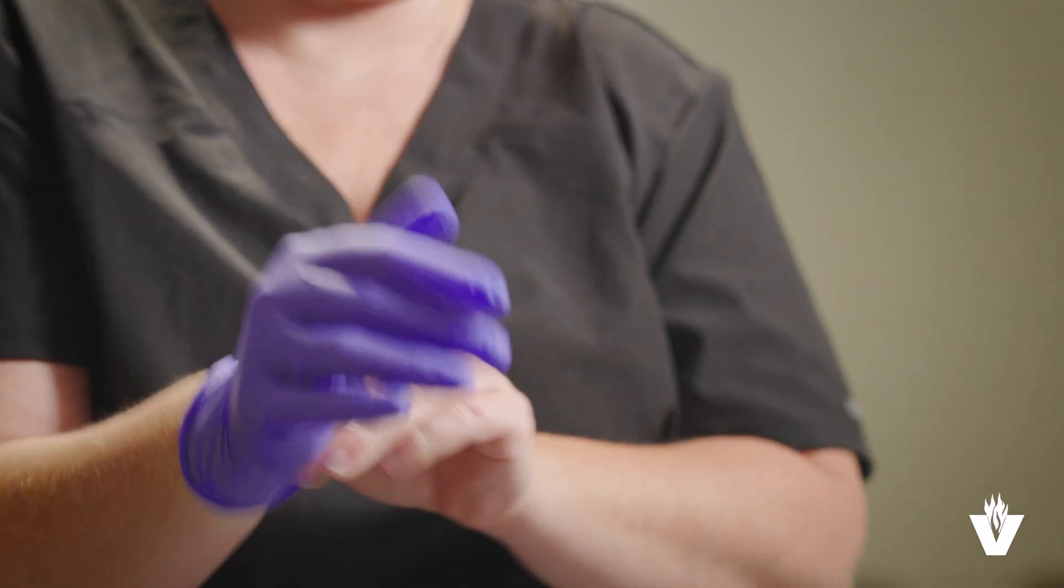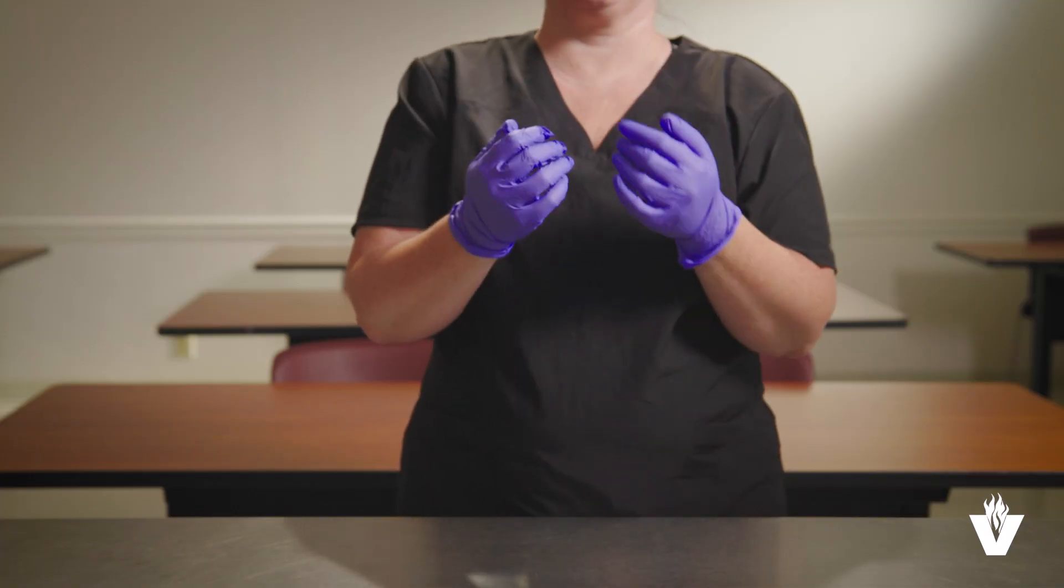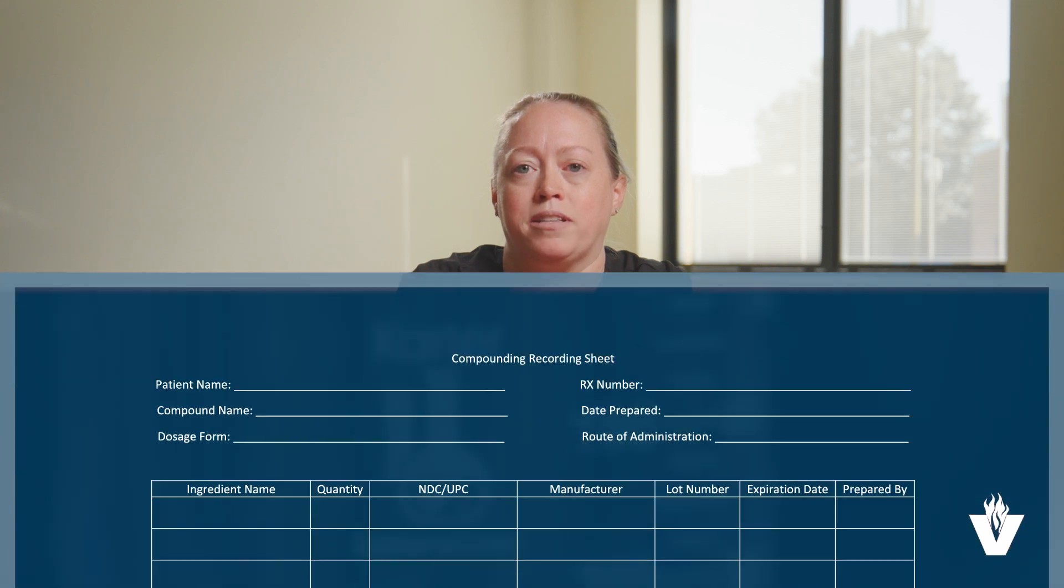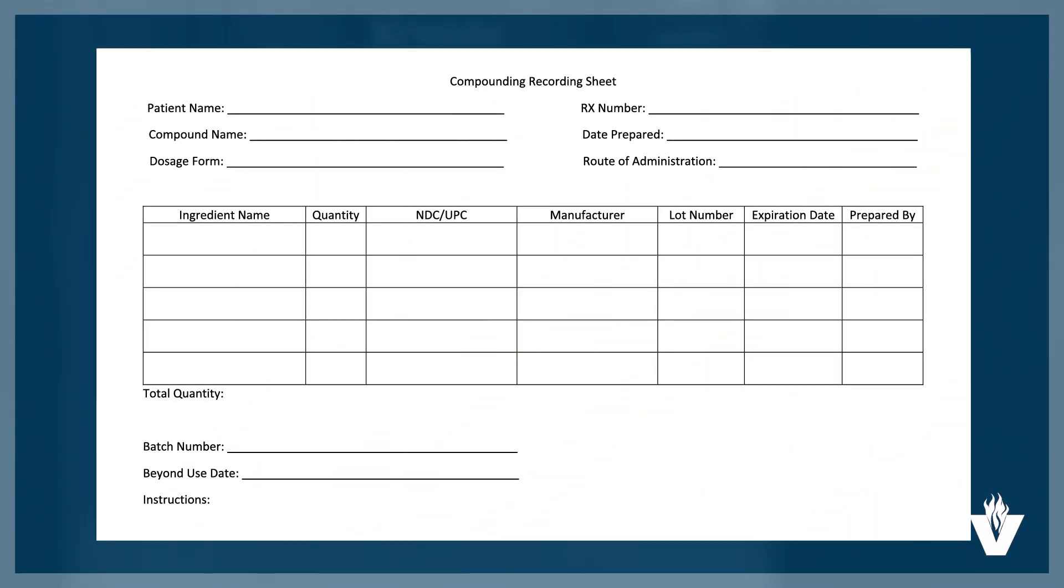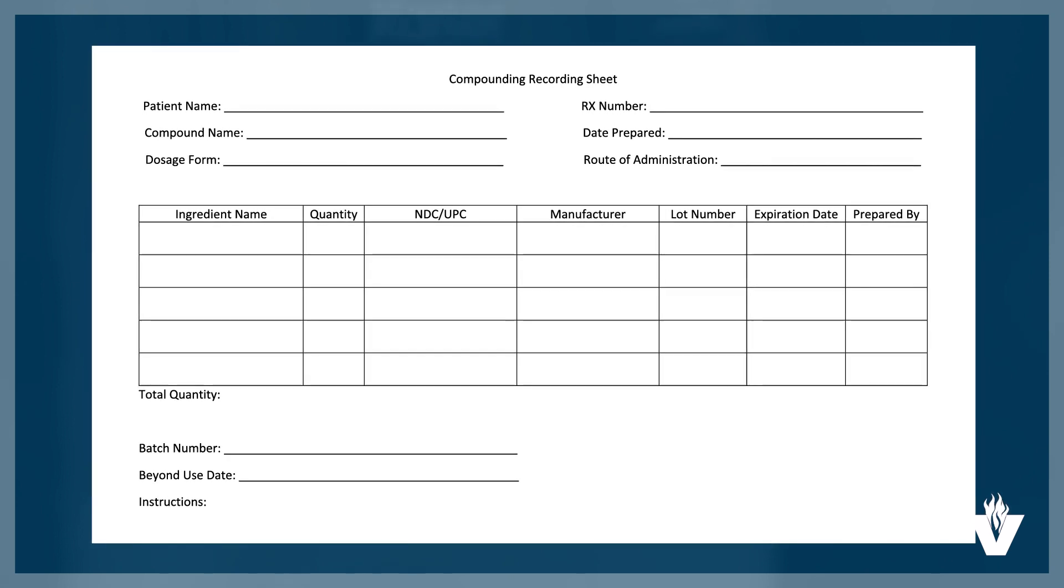First, you will need to wash your hands thoroughly and put gloves on. We will be weighing out the powder active ingredient and base ingredient. You will need to weigh out the correct amount of powder needed for the recipe based on the calculation and compounding sheet.